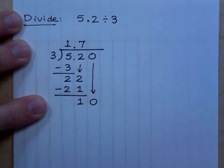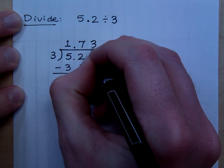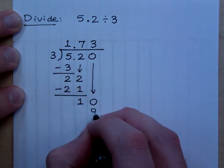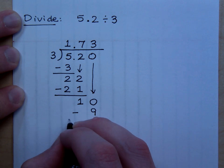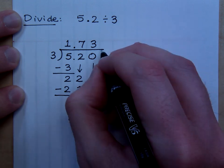3 goes into 10 how many times? 3. 3 times 3 is 9. And I get a remainder of 1. Well, I guess I better add another 0.